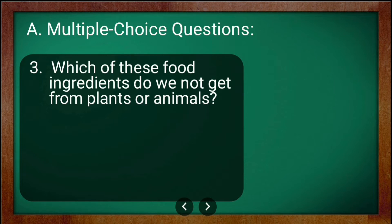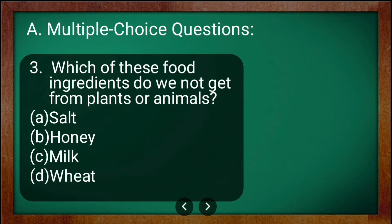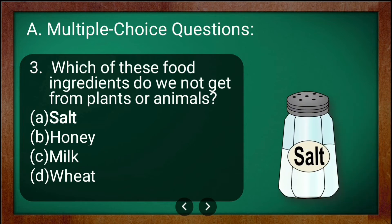Question number three: which of these food ingredients do we not get from plants or animals? The options are salt, honey, milk, and wheat. The answer is salt — we do not get salt from plants or from animals.